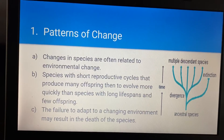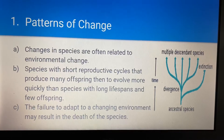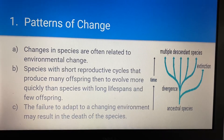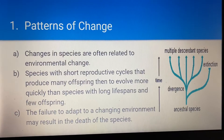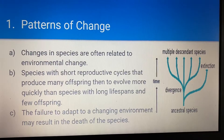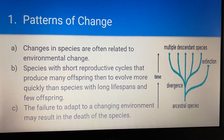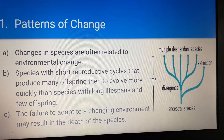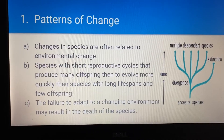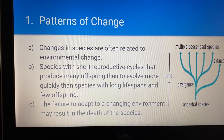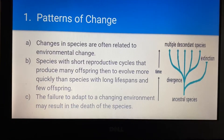So, patterns of change. Changes in species are often related to environmental change. Some species with short reproductive cycles that produce many offspring evolve more quickly than species with long lifetimes and fewer new offspring. We talked about the fruit flies — they only live for less than a week and they evolve in a multitude of ways with each generation. Because when you think about it, by the time somebody lives to be 80 or 90 years old and has children, it's a long time before you see that pattern of change. Usually when you see a major change in DNA, it's through offspring — it'll be the children that have the new mutated genes and are better adapted to survive.